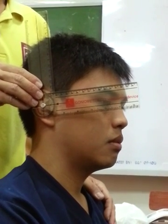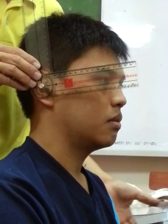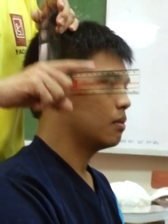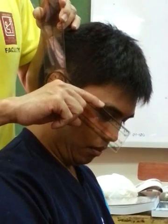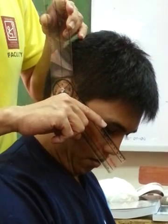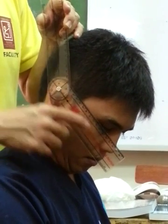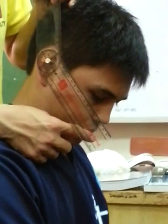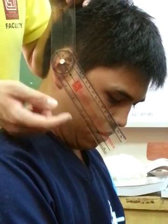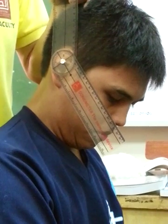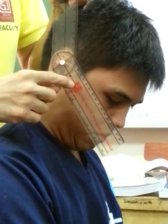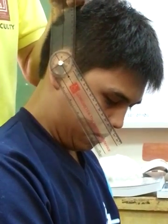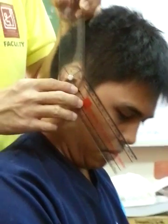After placing the goniometer properly aligned, tell the patient: I want you to bend your head and neck as we discussed, after the count of 3 — 1, 2, 3. The distal arm follows and is aligned to the base of the nose. Your stationary arm also stays in position.